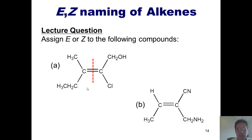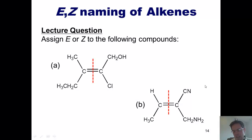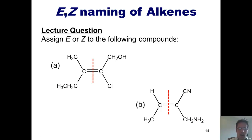For this next example, I draw my dashed line and look at the two substituents on the left side: a hydrogen and a carbon. Carbon has a higher atomic number, so the methyl group is the higher priority. On the right side of the double bond, I have a carbon triple-bonded to a nitrogen and a carbon single-bonded to a nitrogen. Expanding multiple bonds for priority purposes, the triple bond breaks the tie — that substituent is higher priority. My highest-priority groups are on opposite sides of the double bond, and since opposite sides means E, this is an E alkene.